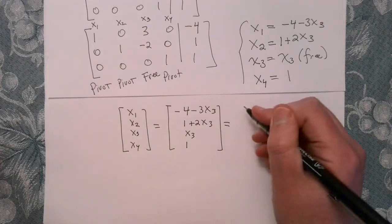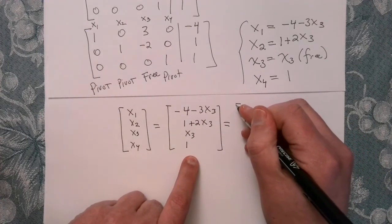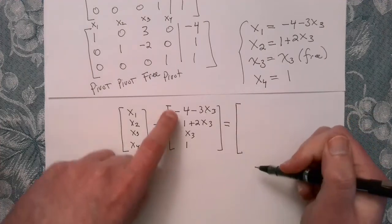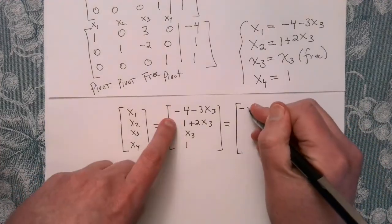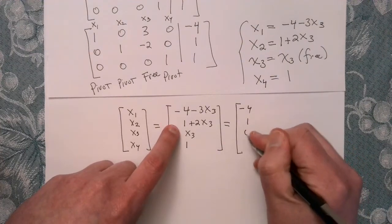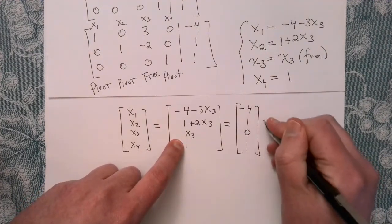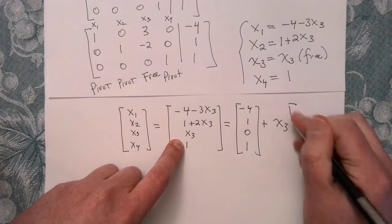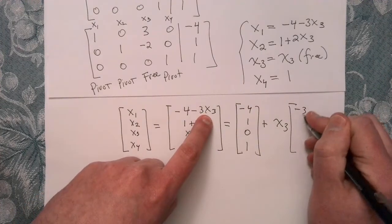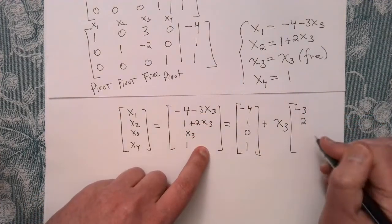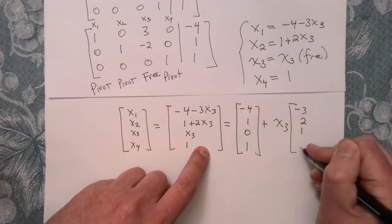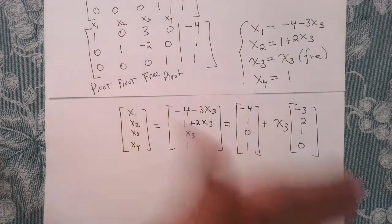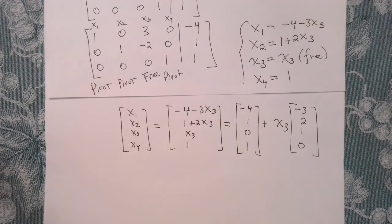We can write the solutions in parametric vector form as a column vector. Breaking this into constants and the free-variable part: the constant vector is (minus 4, 1, 0, 1) plus x3 times (minus 3, 2, 1, 0). This is called parametric vector form.